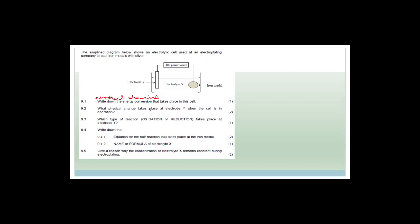What physical change takes place at electrode Y when the cell is in operation? What's happening is we want to coat this iron metal with silver. This is the Ag electrode and there are Ag⁺ ions in here. The silver is going to be coated onto the iron metal. So this electrode is going to be decreasing in mass because it's being converted from Ag to Ag⁺ plus an electron. The physical change at electrode Y is a loss in mass — you could also say the electrode gets smaller.